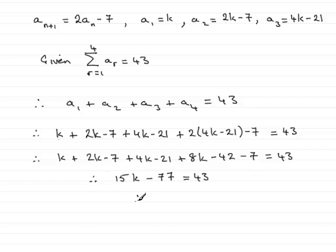Add 77 to both sides, you've got 15k then equals 77 plus 43 which is 120. Divide both sides by 15 and then you get 120 over 15 which turns out to be 8.